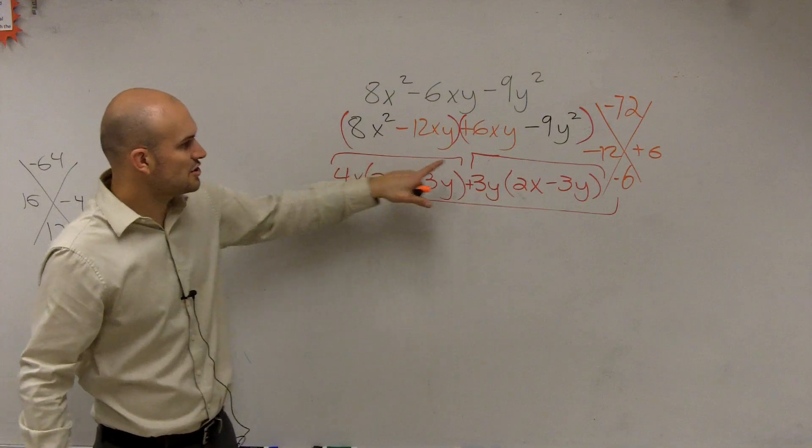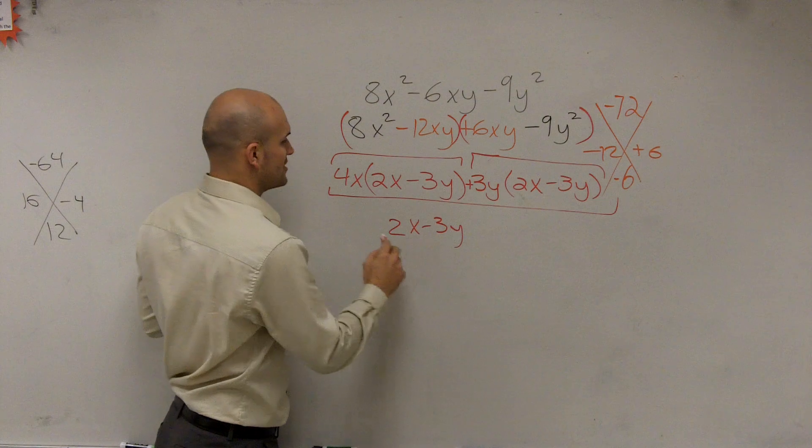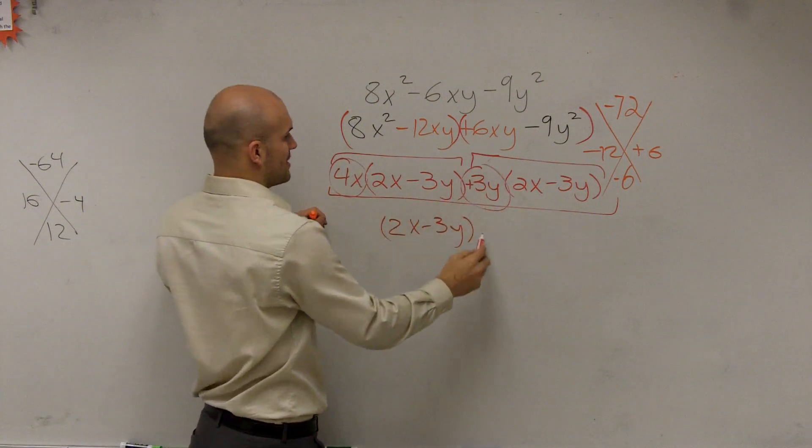So out of this term and this term, what is the only thing they share? The only thing they share is a 2x minus 3y times what's left over? 4x plus 3y.